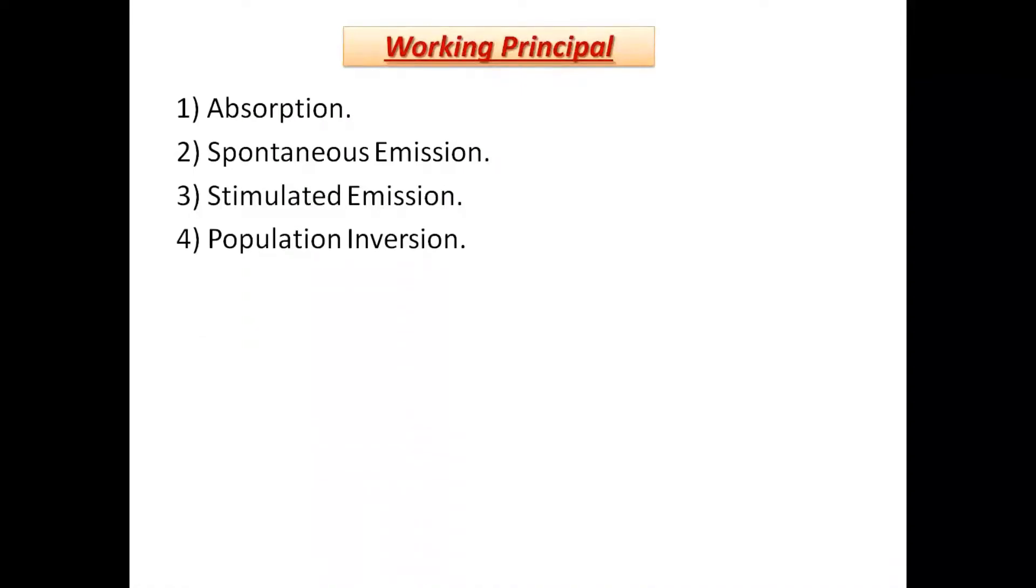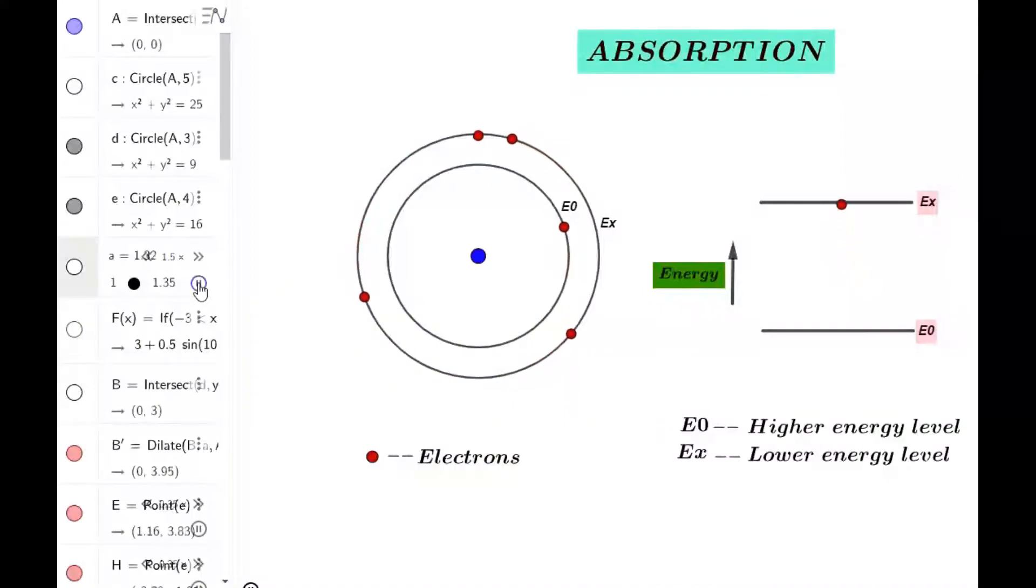Now let's study absorption. An atom consists of different energy states. Let us consider two different states of an electron such as ground state E0 and excited state Ex. Electromagnetic energy falls on an atom in the form of photon. When photon energy falls on the electron, it jumps from lower energy level to higher energy level by absorbing the energy. This process of absorbing energy from photon is known as absorption.